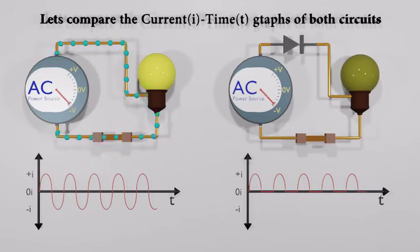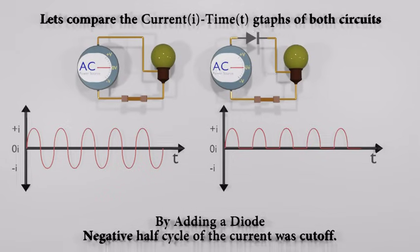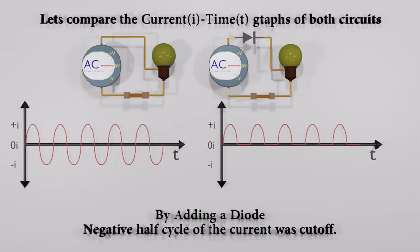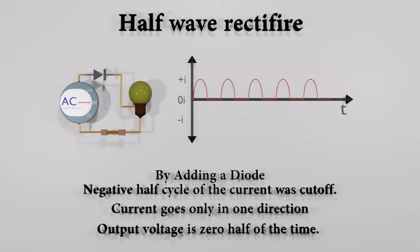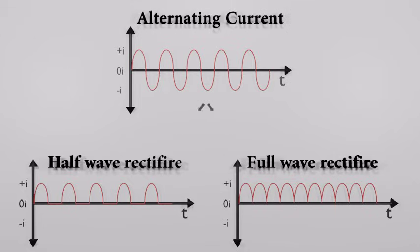Half-wave rectifiers are simple enough to build but aren't very efficient. That's because the entire negative cycle of the AC input is blocked by a half-wave rectifier. As a result, output voltage is zero half of the time. So the full-wave rectifier is needed.